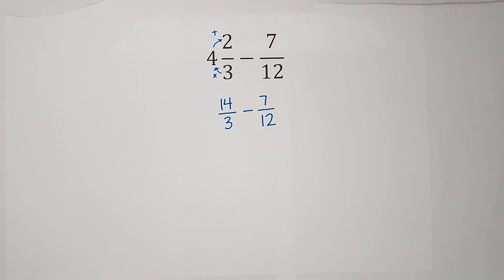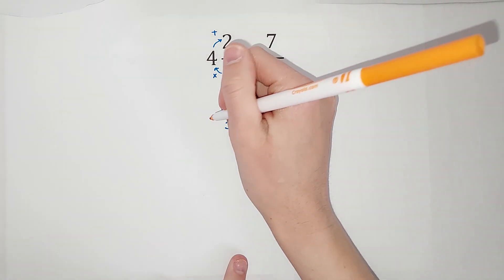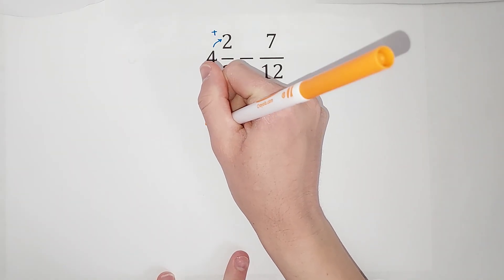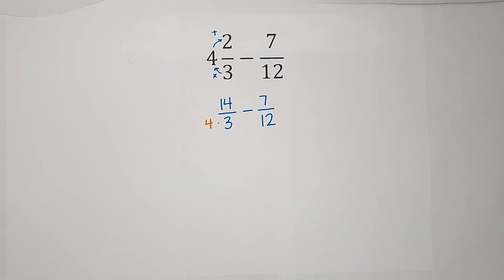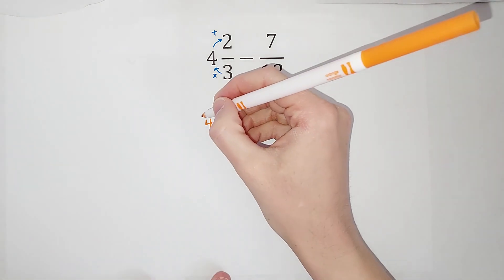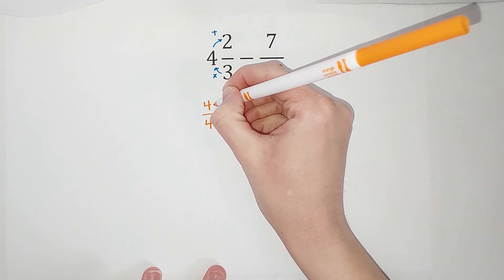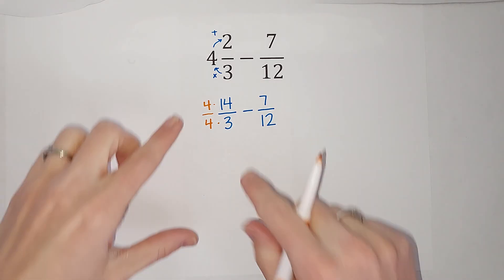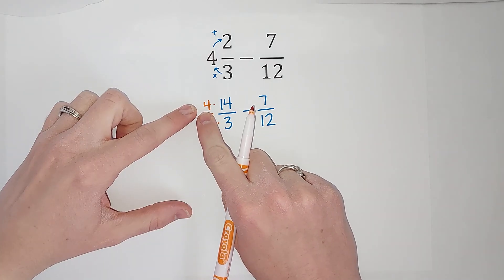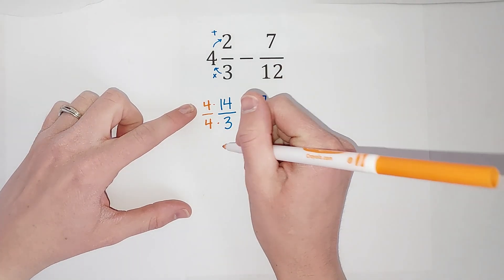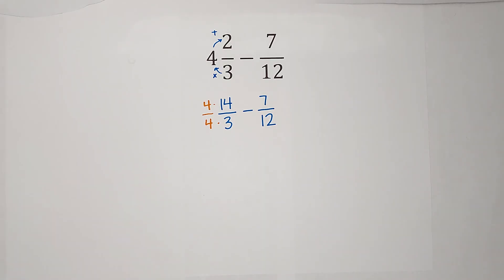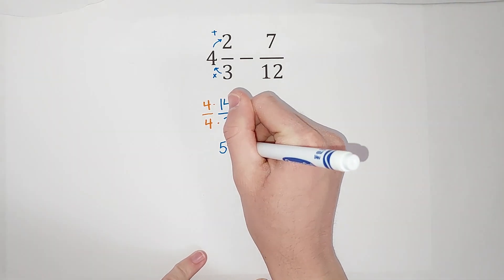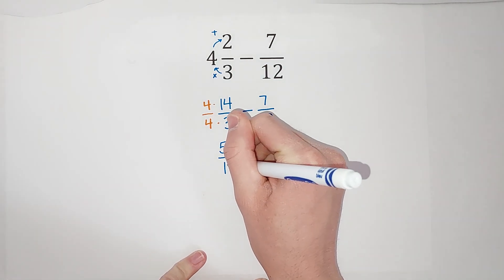3 times what gives me 12? 3 times 4 gives me 12. But I can't just go multiplying by 4 anywhere I like — I need to multiply by 4 over 4. Why? Because 4 over 4 is 1, so I'm really just multiplying by 1. It's just a really weird-looking one. I'm changing what the fraction looks like but not its value. So 4 times 14 gives me 56, and 4 times 3 gives me that 12, which is what I was looking for.